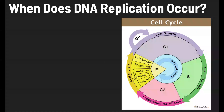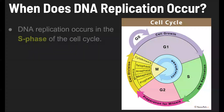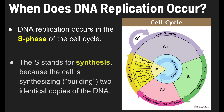When does DNA replication occur? DNA replication occurs during the S phase of the cell cycle. The S stands for synthesis because the cell is synthesizing, or building, two identical copies of the DNA.